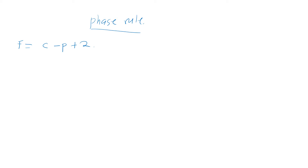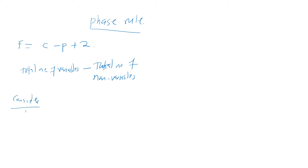The degree of freedom, or the number of degrees of freedom, is the difference between the total number of variables minus the total number of non-variables. We need to consider one heterogeneous system that is in equilibrium, having C components in which P phases are present.